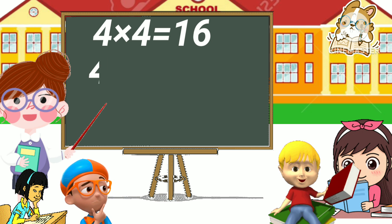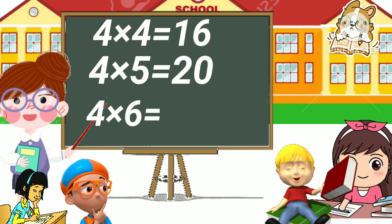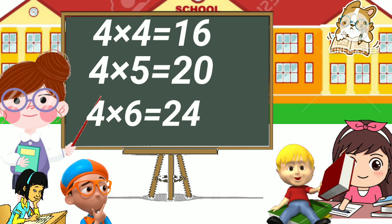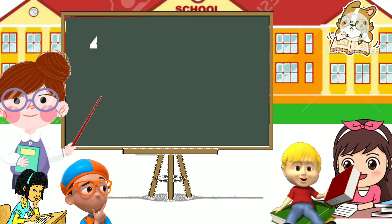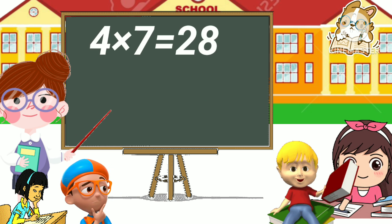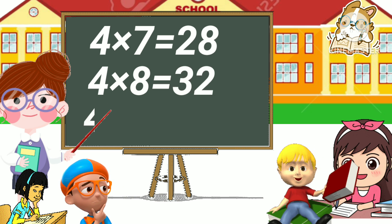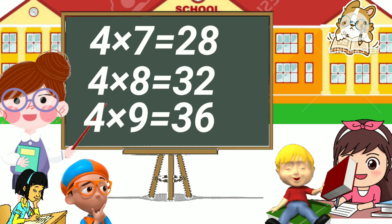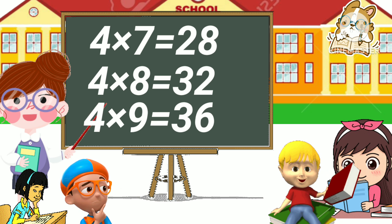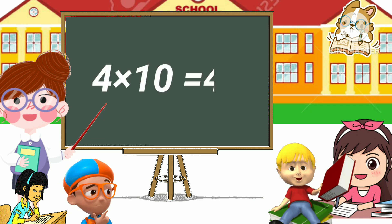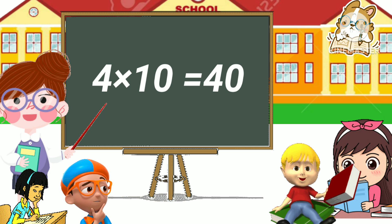Four four has sixteen, four five has twenty, four six has twenty-four, four seven has twenty-eight, four eight has thirty-two, four nine has thirty-six, four ten has forty.